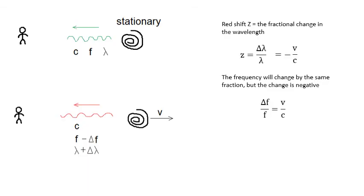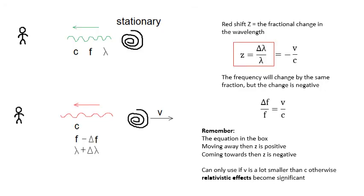Remember the equation in that box there: z is Δλ over λ. The redshift is the fractional change in the wavelength. Remember that if the galaxy is moving away from us, then z is positive. If the galaxy is coming towards us, then z is negative.